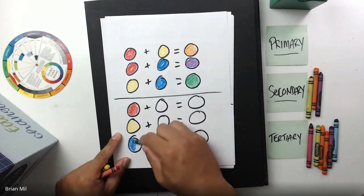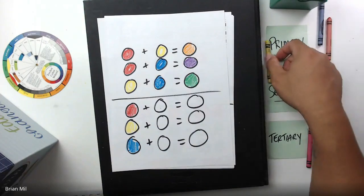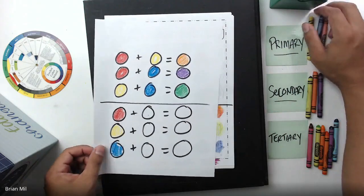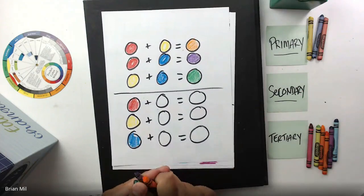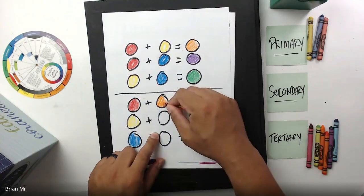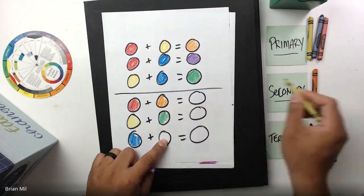And then for the next column we added some secondary colors. Let me see the order that they had: orange, green, violet. So we have orange, green, and violet.